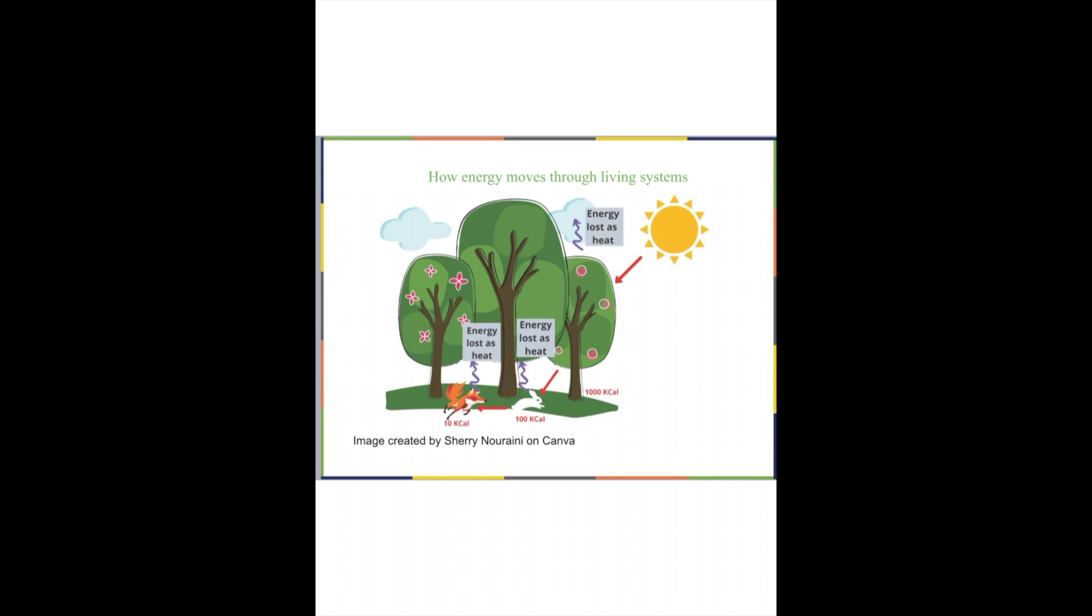So energy is being transformed from this type of light energy into chemical energy, but not all of it is transformed. Some of it is lost as heat. So then the organisms, the autotrophs, such as this rabbit, is going to come and eat this plant and use the energy that is stored in the tree.